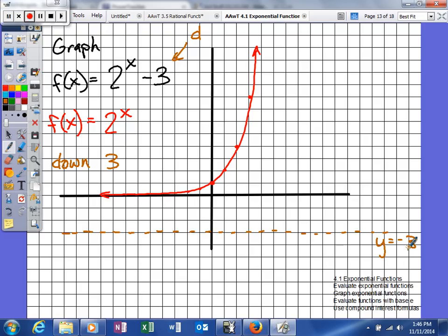And then what we're going to do is we're going to move all the other points down 3 also. So this point will go 1, 2, 3, it will be right here. That point will be here.